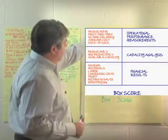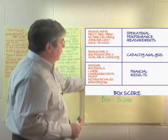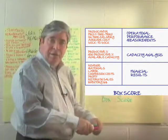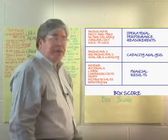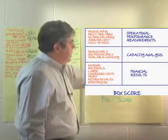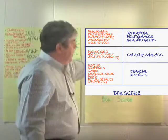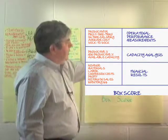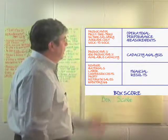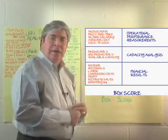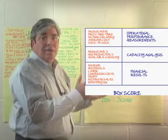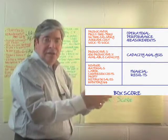The middle section deals with capacity: how much of our capacity is being used productively, how much non-productively, and what's our available capacity. So if we're making a make/buy decision, we'd look at what the value stream looks like currently from an operational, financial, and capacity standpoint. Then we'd ask: if we make it ourselves, how does that impact our measurements, finances, and capacity? What if we use a local company? What if we use a low-cost country? What if we make part of it and outsource the rest? There might be five or six scenarios, and we look at them all on this box score — this three-dimensional view of operational, financial, and capacity performance.